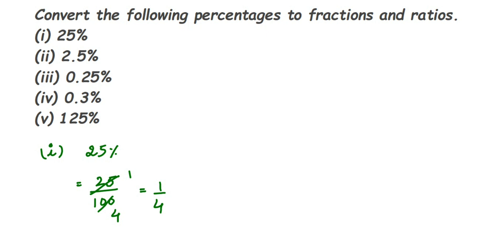The fraction 1 by 4 is in its lowest form. Fractions can also be written in ratio form, but they should be in lowest form first. Since 1 by 4 is already reduced, when you convert this into a ratio it will be equal to 1 is to 4. That's it.